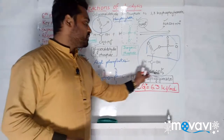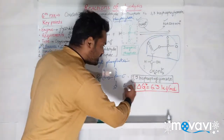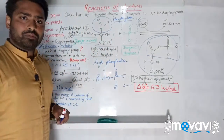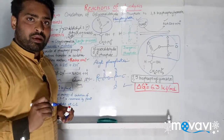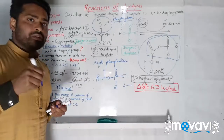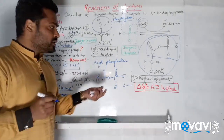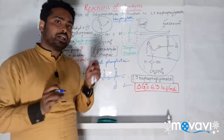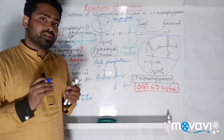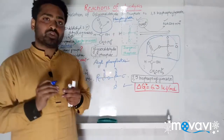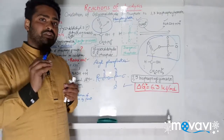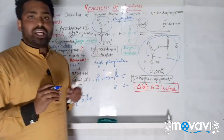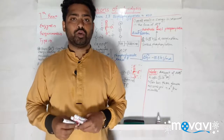After this reaction, what we get is 1,3-bisphosphoglycerate. The free energy content for this reaction is +6.3 kJ/mol — positive means energy is needed, so this reaction is not spontaneously feasible. In living organisms, if one reaction is not feasible (ΔG is positive), we couple it with another reaction whose ΔG is negative. We are going to see that in the seventh reaction of glycolysis.